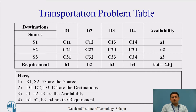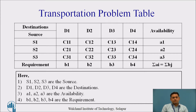This is a transportation problem table. In this table, we observe cells showing sources and destinations with availability, requirement, and transportation cost. For example, the cost of supplying from source S1 to destination D1 is C11, and C12 is the cost from S1 to D2. All these costs are per unit commodity or product.